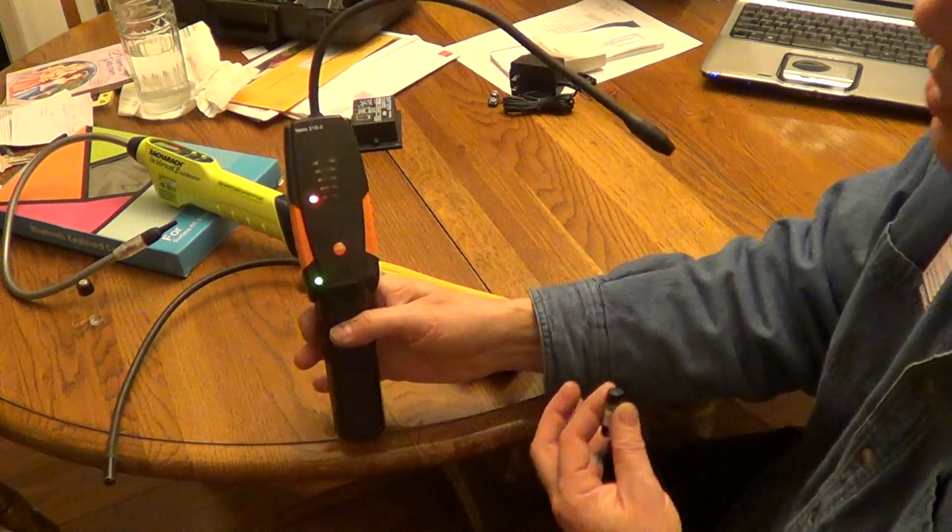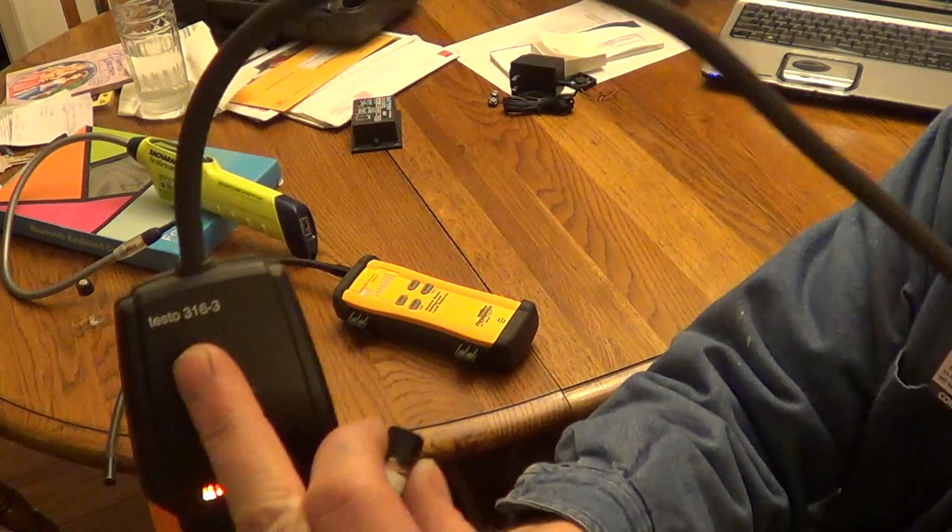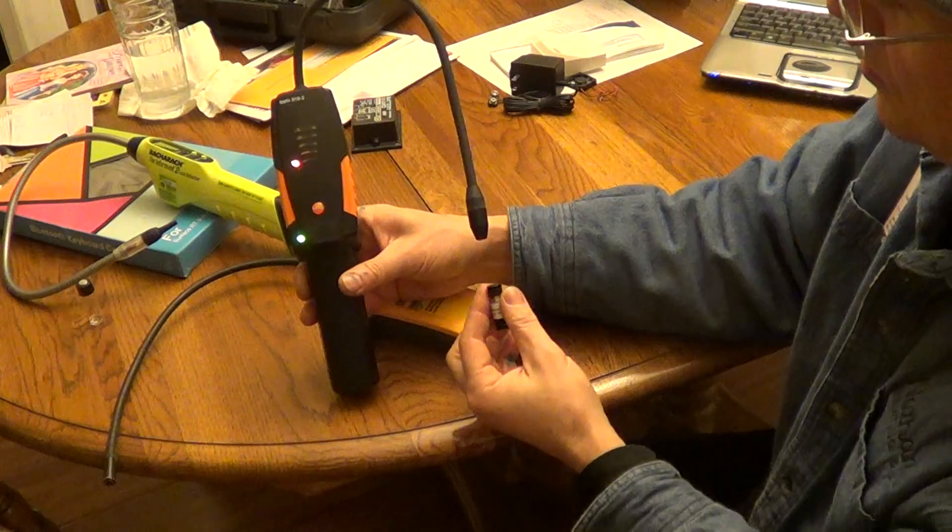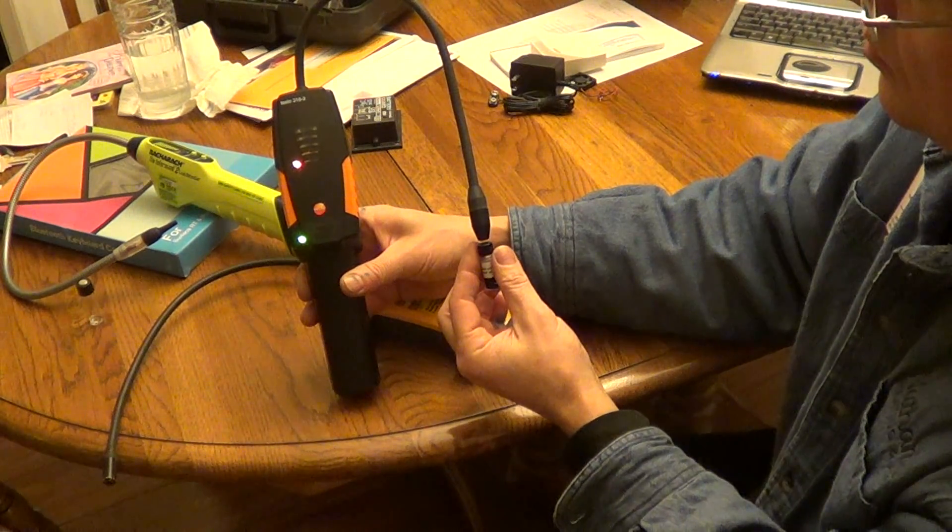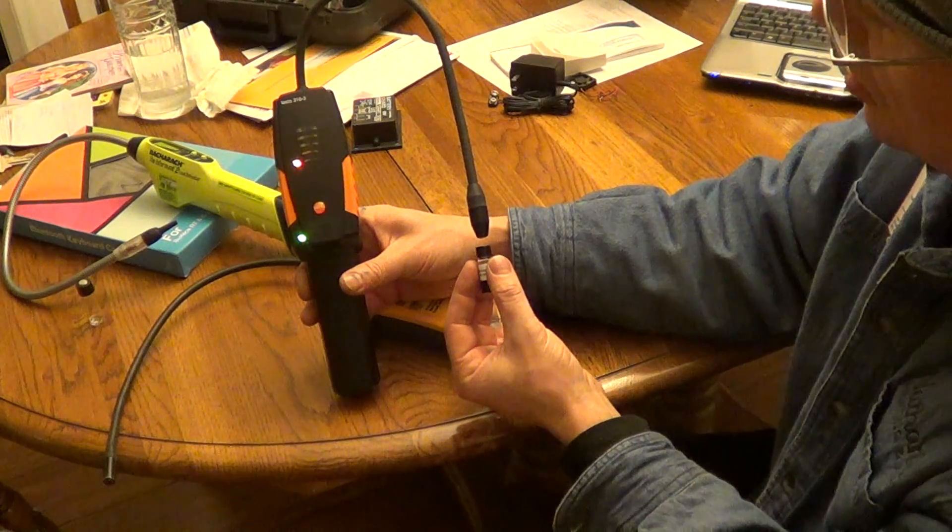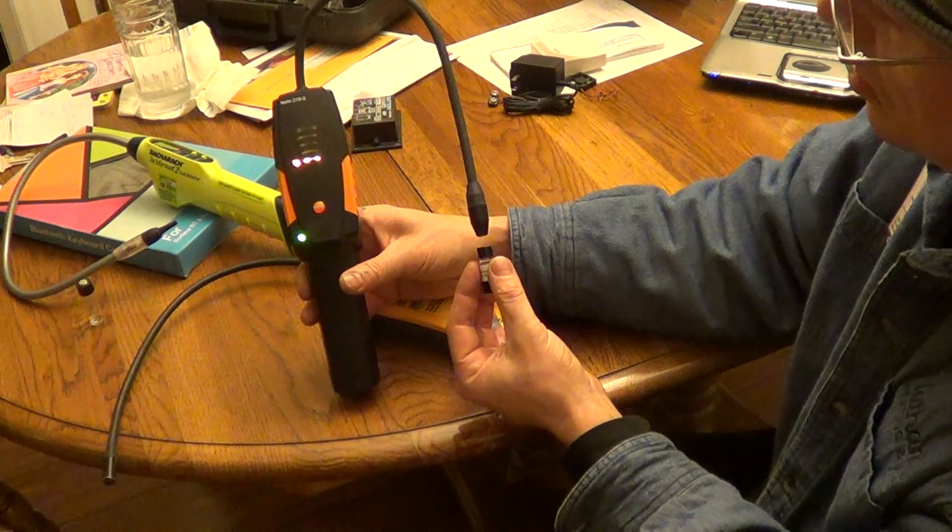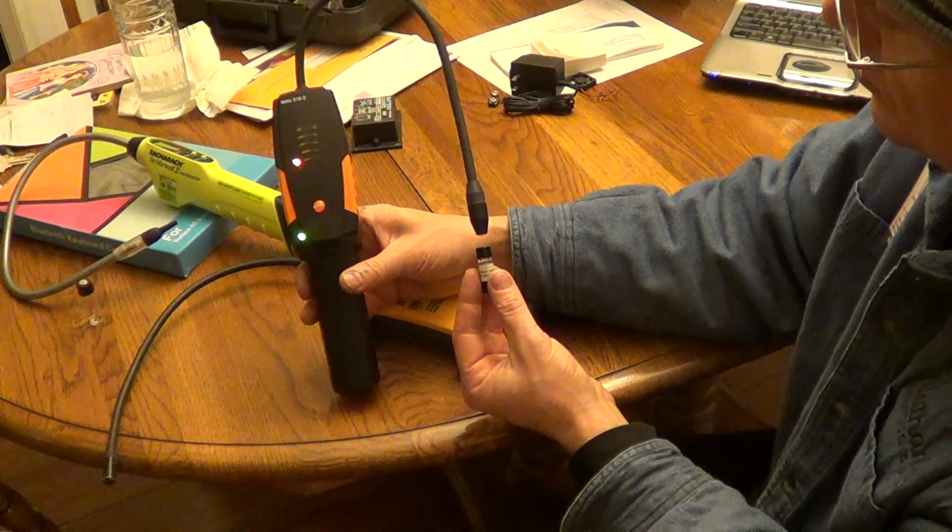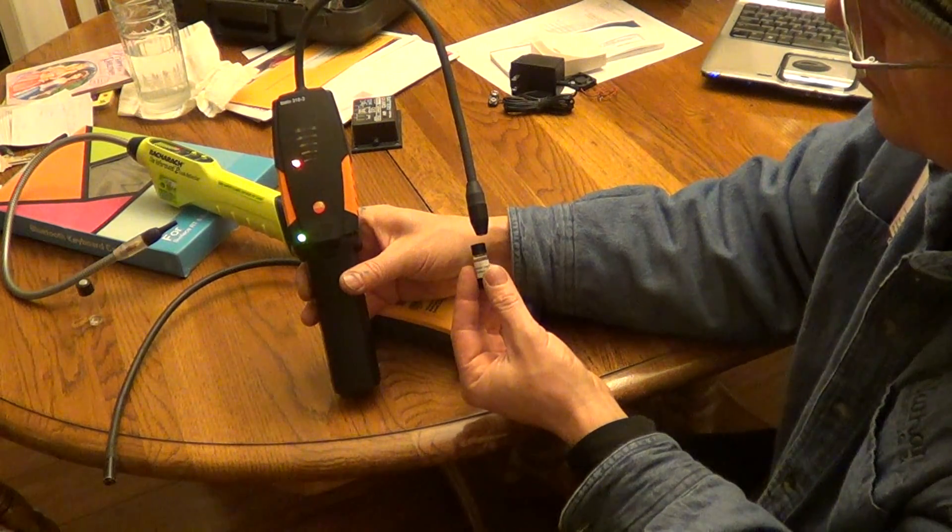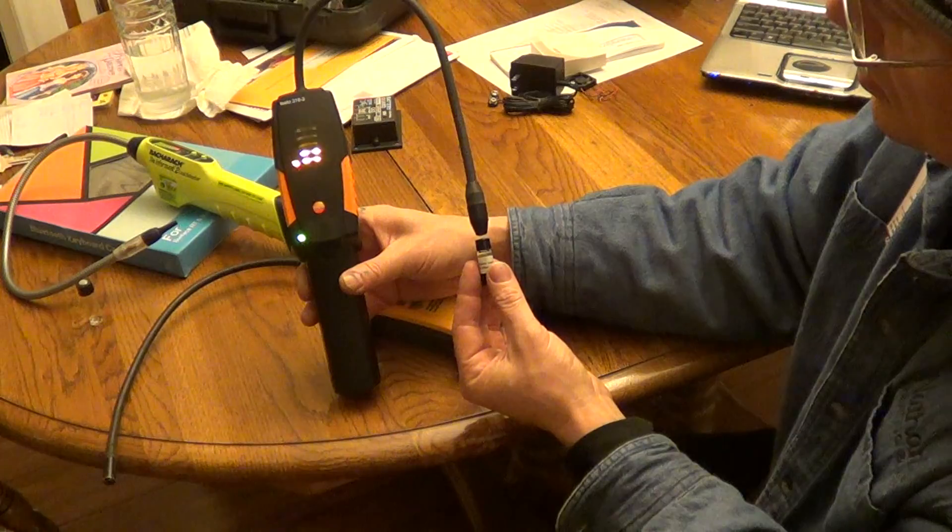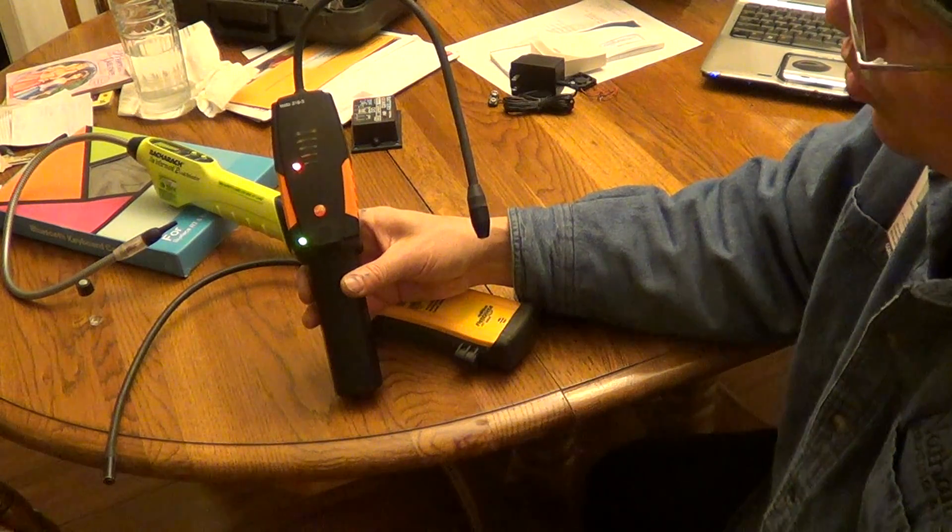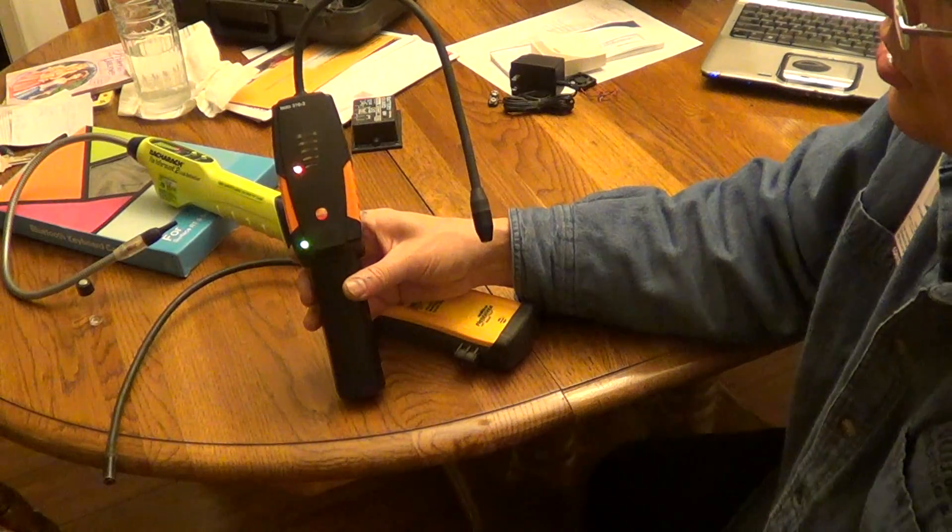Okay, Testo. This is a 316-3. Okay, it looks like it's about a quarter inch. It picks it up. So on the HFC, about a quarter inch. And it's not nuisance tripping at all.